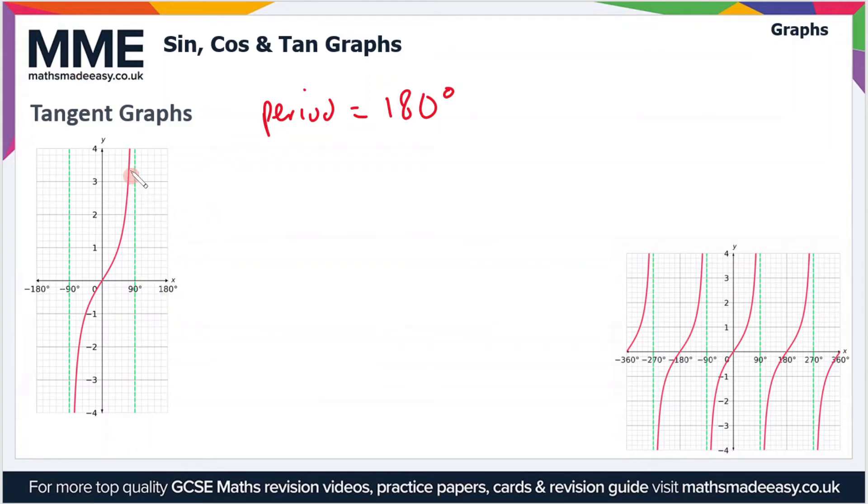The key features to point out with the tangent graph are that it crosses the origin and that it also has these asymptotes. So these are lines which the graph gets ever closer to but doesn't actually touch. These occur at minus 90 and 90. They occur on the other side as well, and then they occur again at 270. So you can see that these asymptotes repeat every 180 degrees, giving rise to the graph that looks like the one we have here. This is many repeat periods of the tangent function.